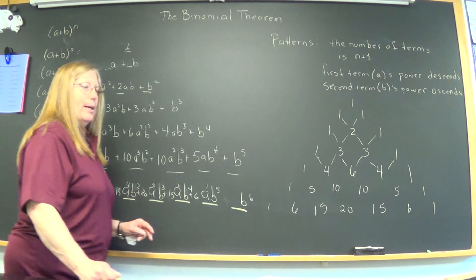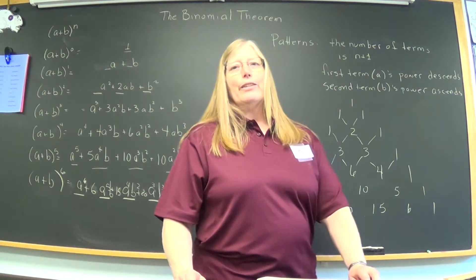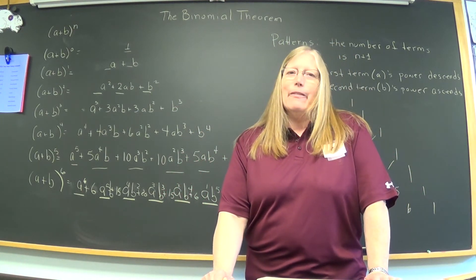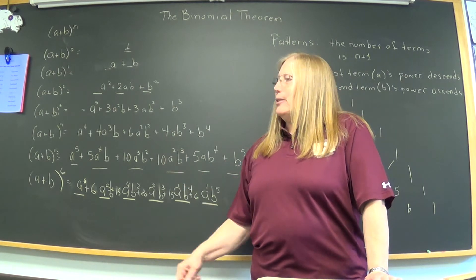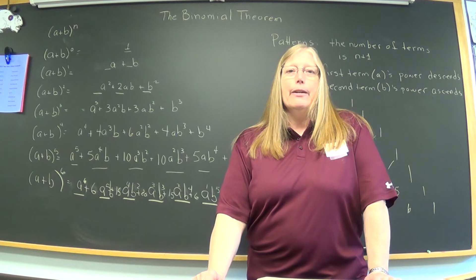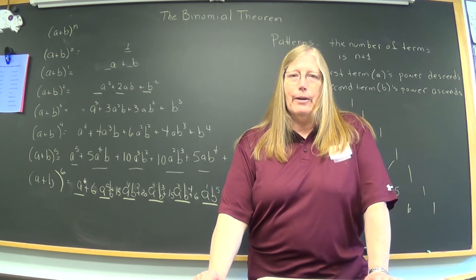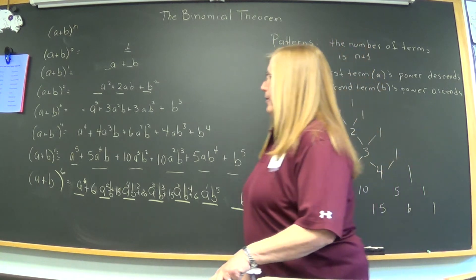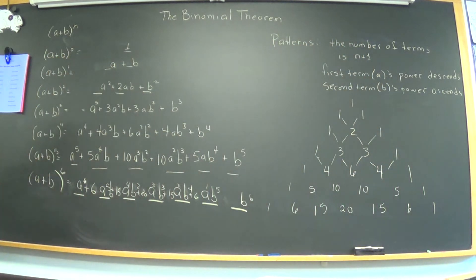So, that works pretty well, unless we have numbers like a plus b to the 25. It would be an aggravation to do Pascal's triangle down that far. So, we'll actually use the binomial theorem for those kind. So, I'm going to shut this segment down and start again on part two. I hope that fit in okay.